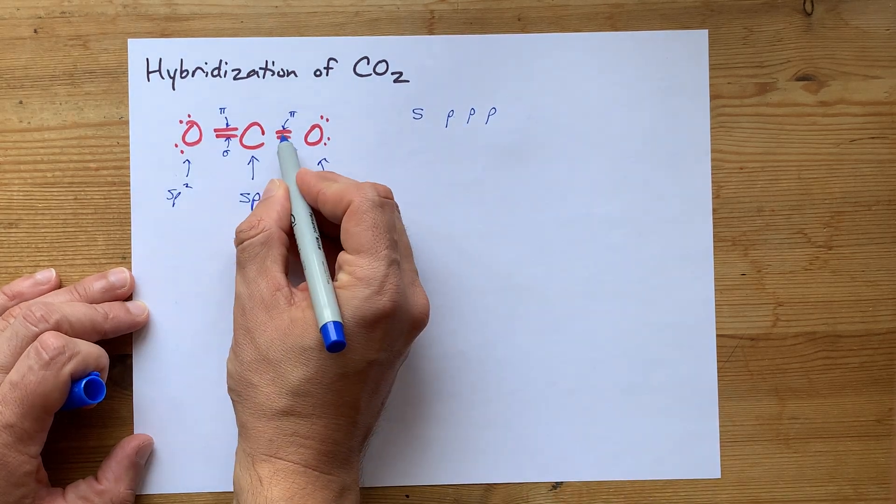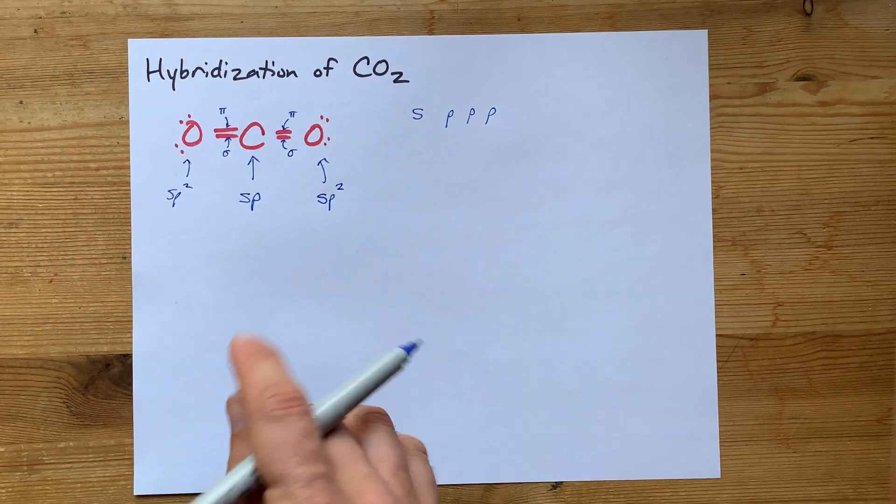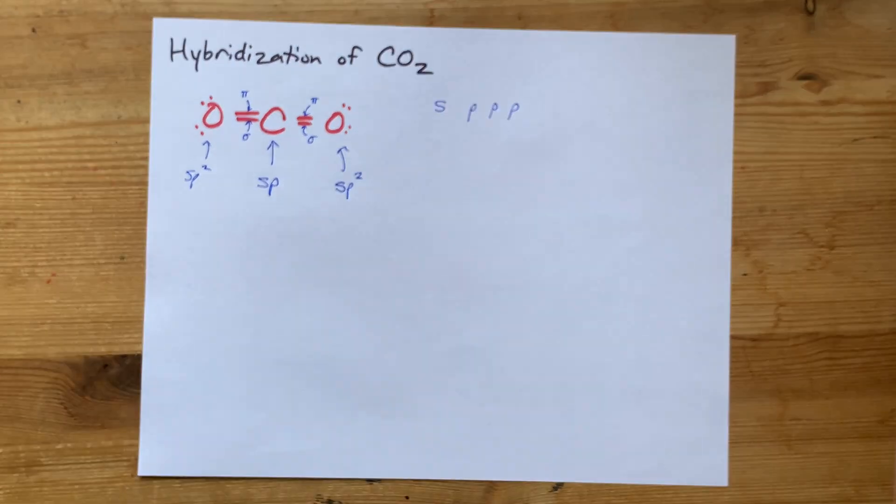There were three. One, two gets set aside for the pi bonds. SP1. We don't write the one. You never write an exponent of one. But hey, that's the way it goes.